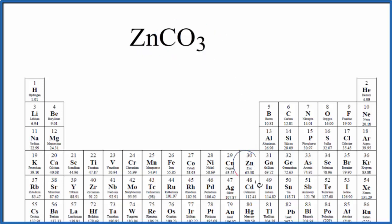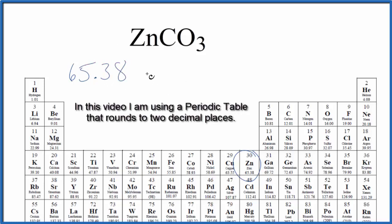On the periodic table, zinc is 65.38, and the units are grams per mole. I won't write grams per mole right now; let's do that at the end. We only have one zinc atom.